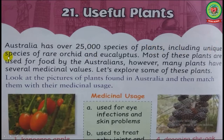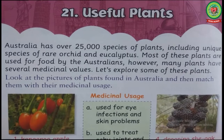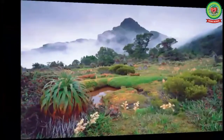Now students, come to our reading part. Put your pencil here. Australia has over 25,000 species of plants, including unique species of rare orchid and eucalyptus. Most of these plants are used for food by the Australians; however, many plants have several medicinal values. Let's explore some of these plants.